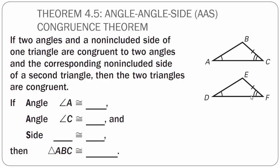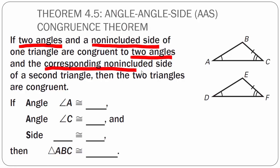Theorem 4.5: Angle-Angle-Side, AAS Congruence Theorem. If two angles and a non-included side of one triangle are congruent to two angles and the corresponding non-included side of a second triangle, then the two triangles are congruent. In our case, angle A is congruent to angle D — they both have one arc — and angle C, which has two arcs, is congruent to angle F, which also has two arcs. And side BC is congruent to line segment EF.